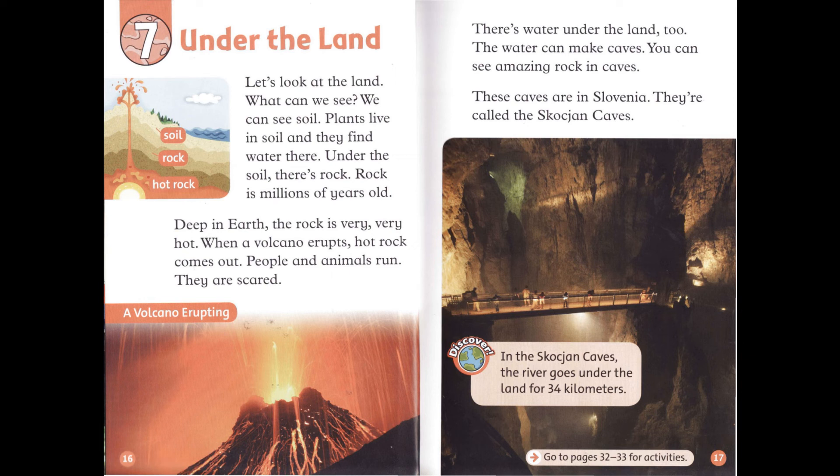There's water under the land, too. The water can make caves, and you can see amazing rock in caves. These caves are in Slovenia — they're called the Škocjan Caves. In the Škocjan Caves, the river goes under the land for 34 kilometers.